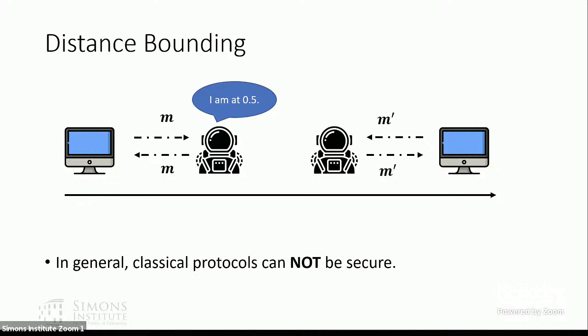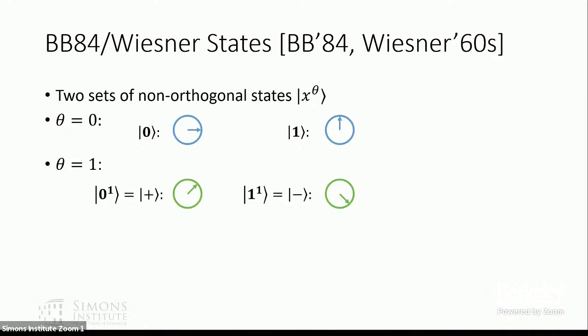It is therefore natural to think about exchanging quantum information using unclonable quantum states. In the impossibility result, the attack works because we can copy classical information, but using quantum information we may prevent the attack. So now we introduce the most fundamental state exhibiting unclonable properties, which are BB84 states.